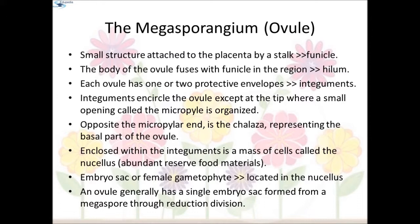The megasporangium or ovule: the ovule is a small structure attached to the placenta by means of a stalk called the funicle. The body of the ovule fuses with the funicle in a region called the hilum; thus the hilum represents the junction between the ovule and the funicle. Each ovule has one or two protective envelopes called integuments. Integuments encircle the ovule except at the tip, where a small opening called the micropyle is present. Opposite the micropylar end is the chalaza, representing the basal part of the ovule. Enclosed within the integuments, the ovule is a mass of cells called the nucellus, which has abundant reserve food materials. Located in the nucellus is the embryo sac or female gametophyte. An ovule generally has a single embryo sac formed from a megaspore through reduction division.